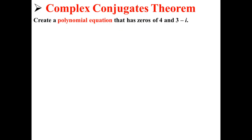Let's create a polynomial equation that has zeros of 4 and 3 minus i. So we have zeros of 4, zeros of 3 minus i, and a zero of 3 plus i due to the Complex Conjugates Theorem.